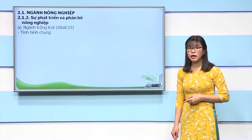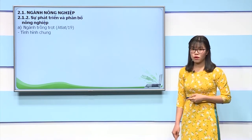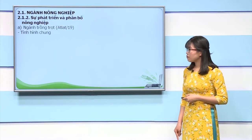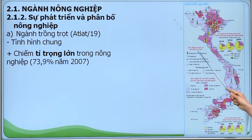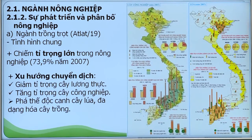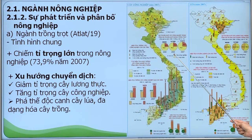Về sự phát triển và phân bố nông nghiệp, ngành nông nghiệp của nước ta được chia thành hai nhóm ngành là trồng trọt và chăn nuôi. Về ngành trồng trọt, quan sát biểu đồ giá trị sản xuất ngành trồng trọt trong tổng giá trị sản xuất nông nghiệp ở Atlas trang 19: ngành trồng trọt chiếm tỷ trọng lớn trong cơ cấu giá trị sản xuất nông nghiệp (73,9% năm 2007), nhưng đang có xu hướng giảm. Về xu hướng chuyển dịch, cây lương thực đang có xu hướng giảm tỷ trọng, cây công nghiệp đang có xu hướng tăng tỷ trọng, cho thấy nước ta đang phá thế độc canh của cây lúa, đa dạng hóa cây trồng.